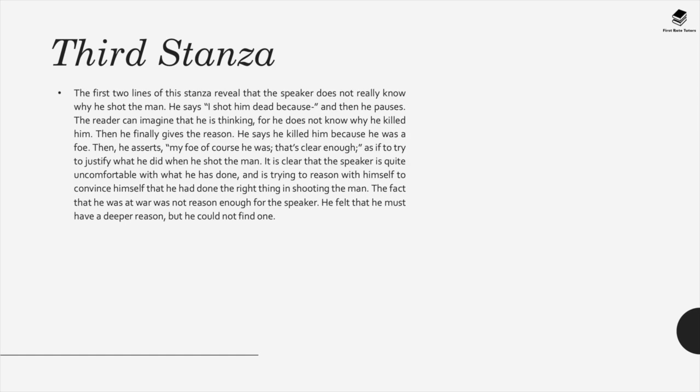In the third stanza, the speaker doesn't really know why he shot the man. He says 'I shot him dead because—' and then pauses, unable to come up with a reason. Eventually he concludes he killed him 'because he was my foe, of course he was.' This shows the speaker trying to justify what he did, clearly uncomfortable and reasoning with himself to convince himself he did the right thing.